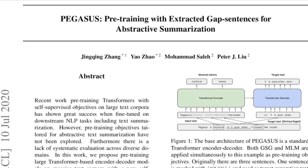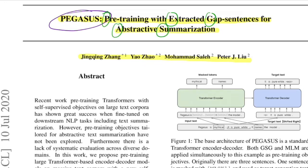Hi there, welcome back to the new video. Today we'll be going through this paper titled PEGASUS: Pre-training with Extracted Gap Sentences for Abstractive Summarization. It is from authors at Google and was released early this year. The acronym PEGASUS stands for P-E-G-A-S-U-S, where the last S stands for sequence-to-sequence model.